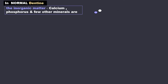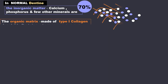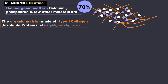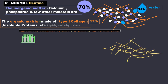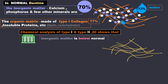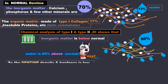Inside normal dentine, inorganic matter like calcium, phosphorus, and a few other minerals make up about 70%. Organic matrix made of type 1 collagen, insoluble proteins, etc. is about 17%, and it also consists of about 13% water. In DI, the matrix formed is already defective. Chemical analysis of type 1 and type 2 DI shows that the inorganic matter is below normal and water is 60% above normal. Due to this, the dentine density and hardness is low.